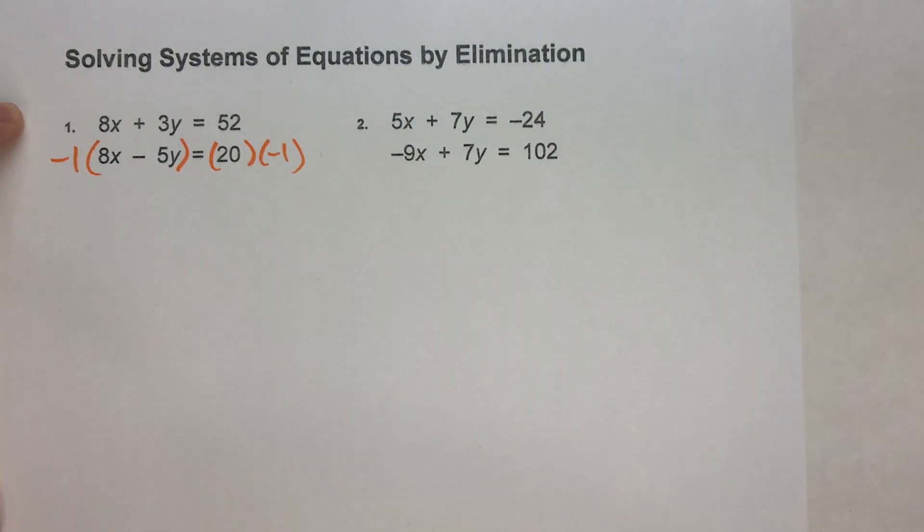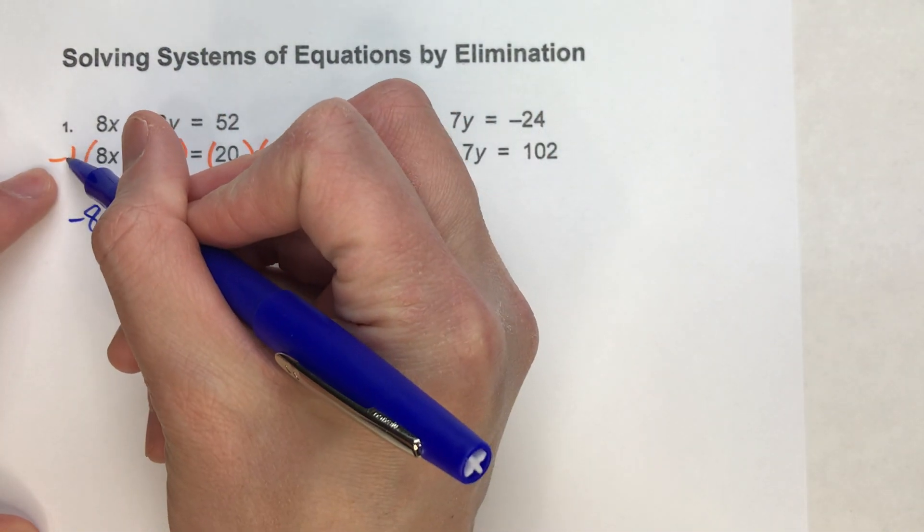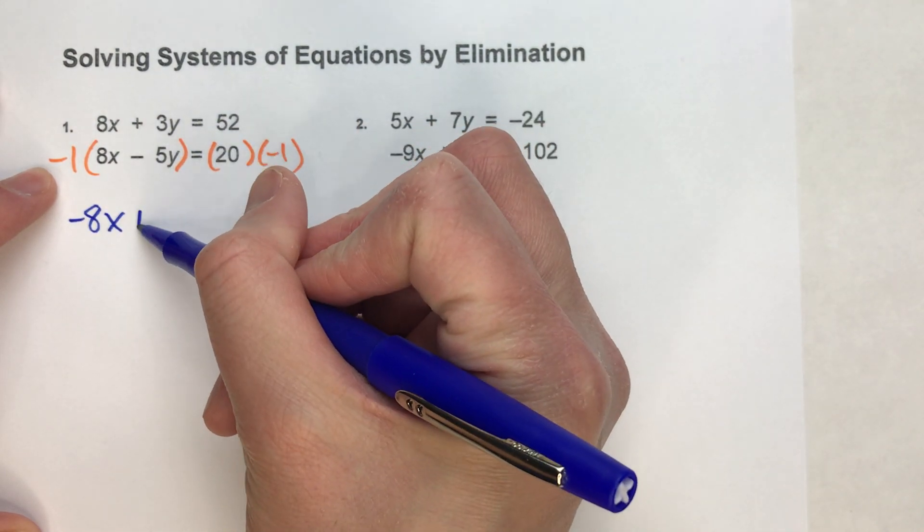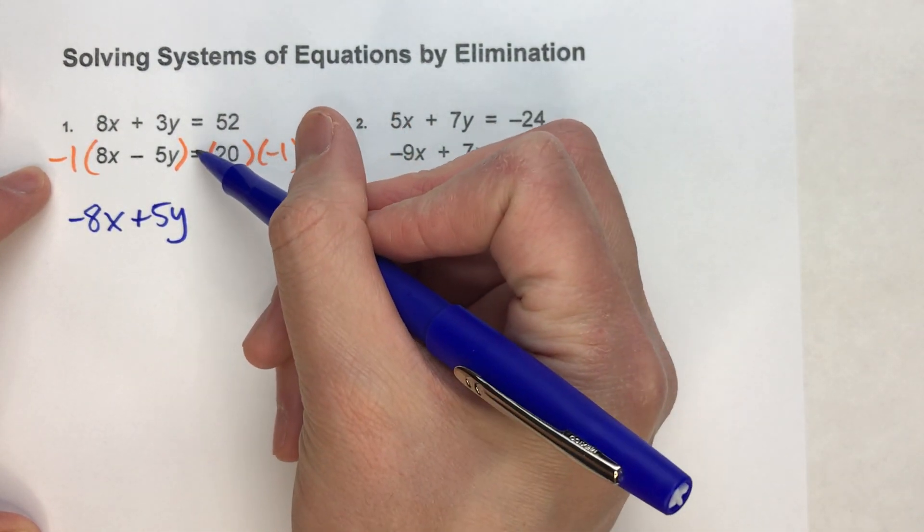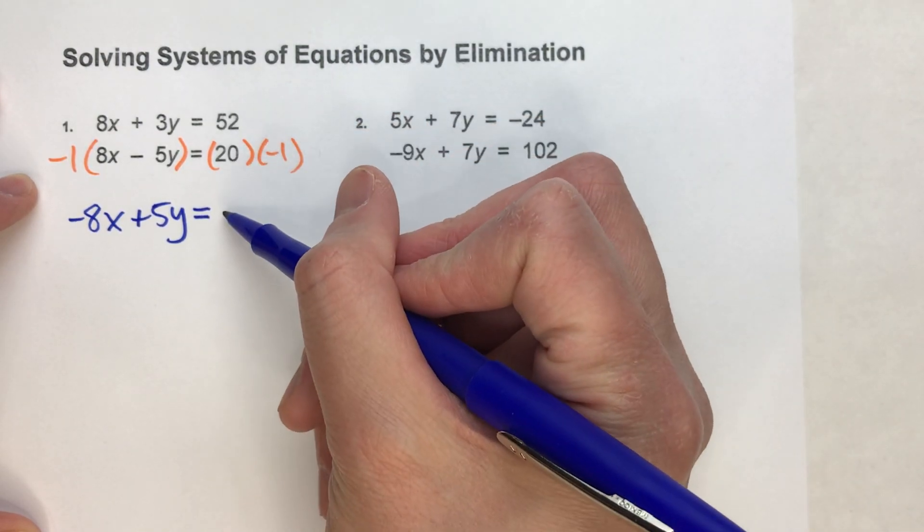So if I do that, this second equation becomes negative 1 times 8x, which is -8x. Negative 1 times -5y becomes positive 5y. Drop down my equals. And on the other side, 20 times negative 1 becomes -20.